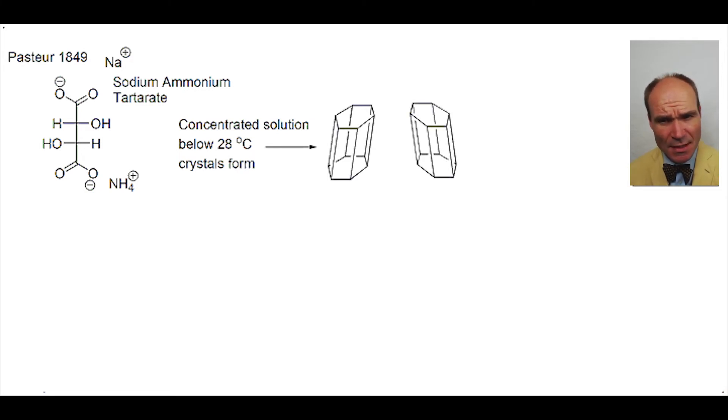What was interesting was that there were two different types of crystals that formed that were mirror images of each other. They turned out to be two enantiomers.